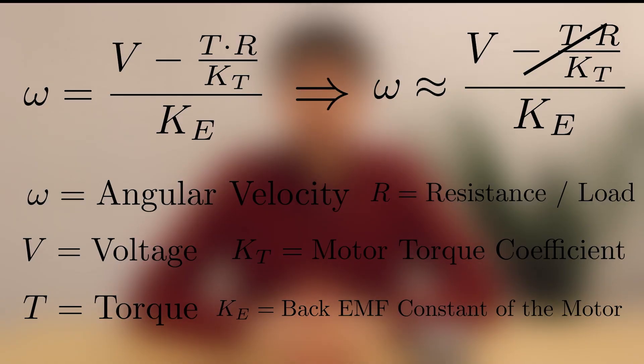We should also note that there are some minor losses within the ESC, so the input voltage is higher than the average output voltage to the motor, but usually only by a few percent. In a no-load condition, you can also use the motor's KV value to estimate the motor speed based on the voltage delivered. We can replace the back EMF with input voltage in this equation to estimate the rotation speed of an electric motor.